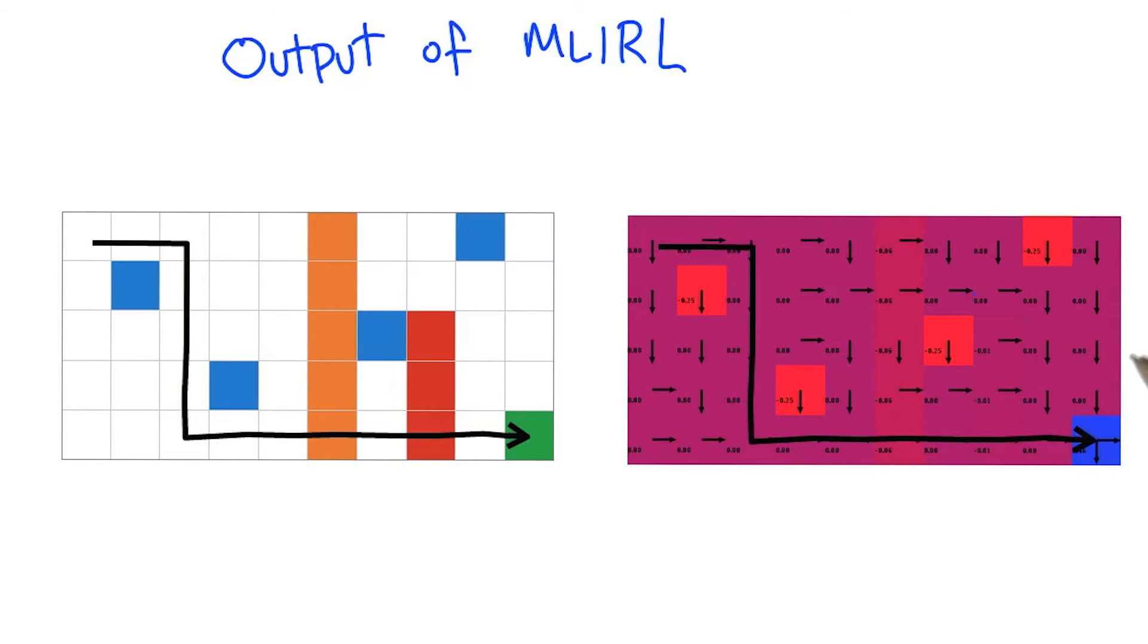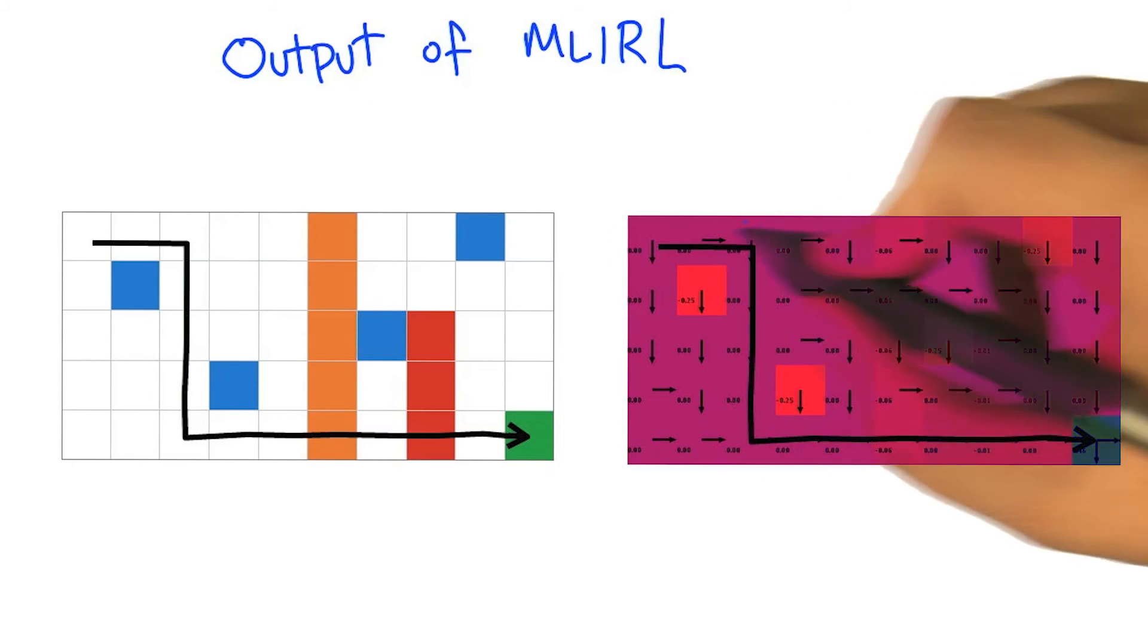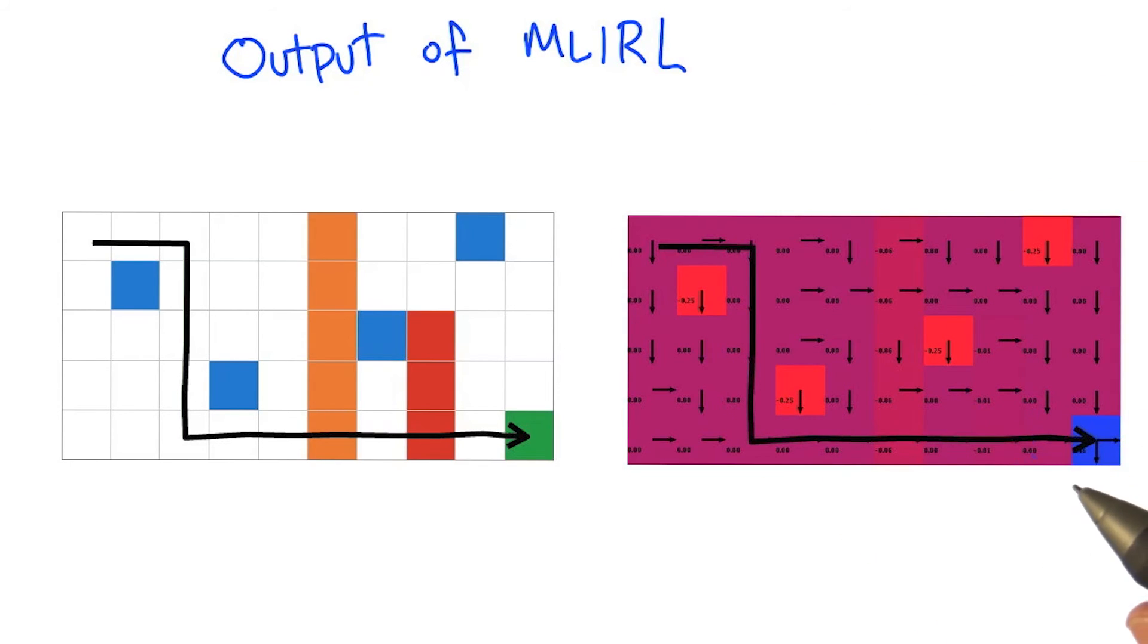Right. And so the fact that it didn't hit blue, it used that as data. So it actually is combining this notion of, you know, you're planning in the full MDP with, well, we get to see one trajectory through that, so what is that telling us about other parts of the MDP?